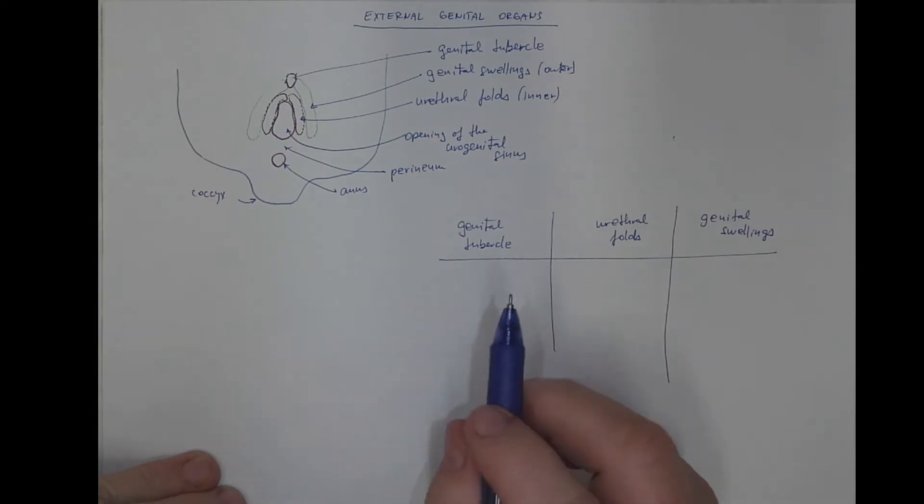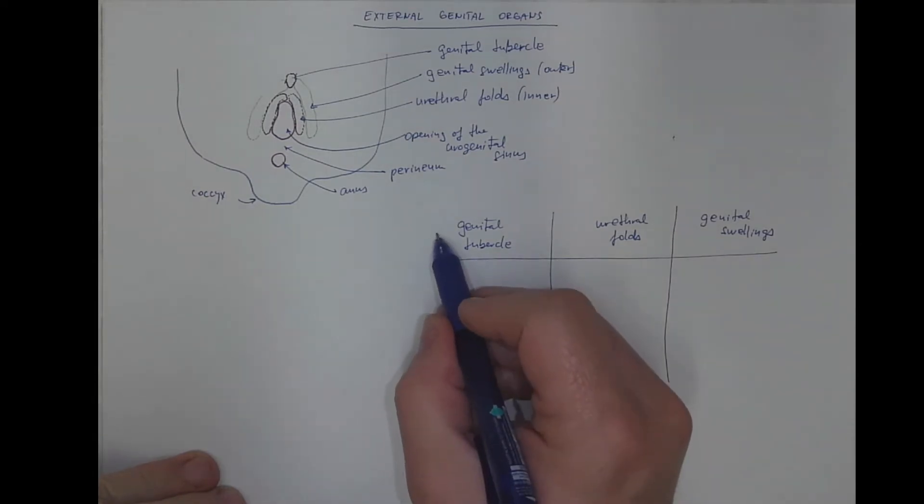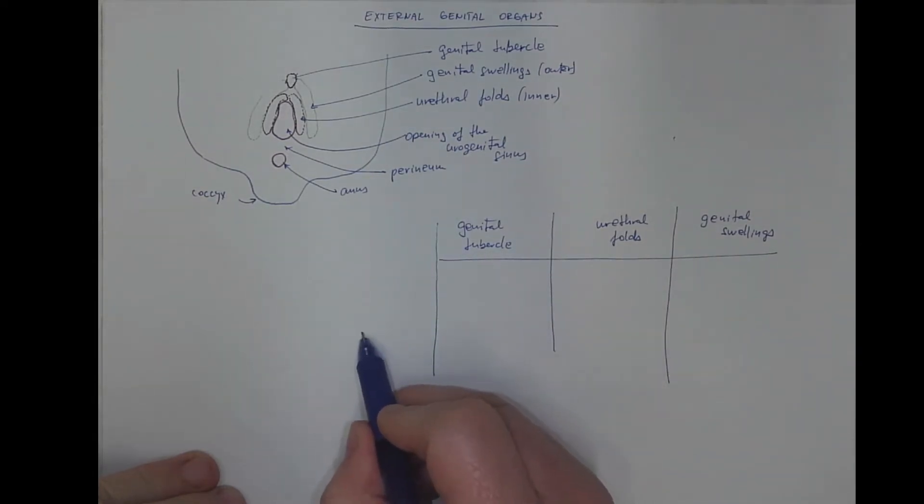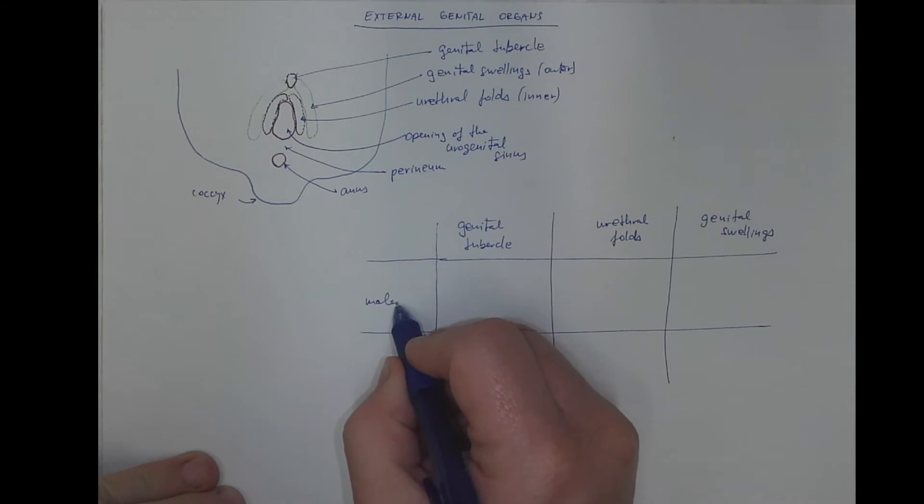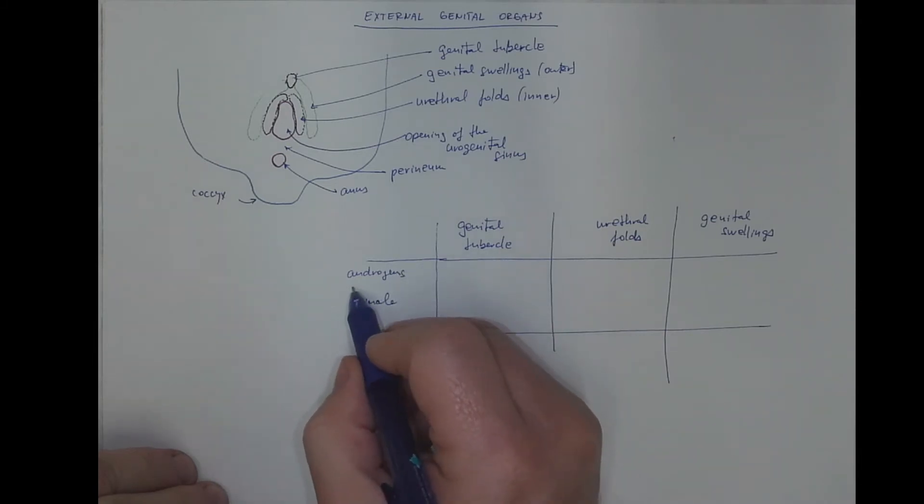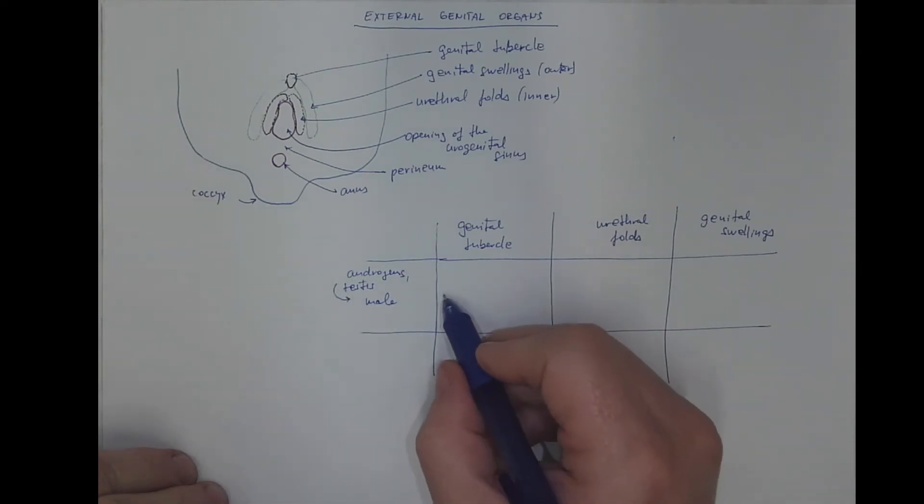In male embryos, under the effect of androgens and other factors from the testis - so if there is a histologically differentiated testis - the genital tubercle becomes the penis.